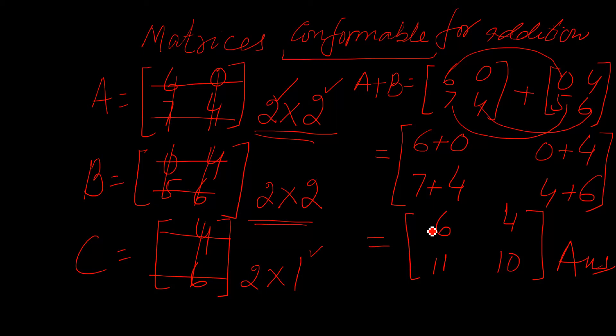But if someone asks you add A plus C, you cannot add it. Why? Because you should know the reason. The reason is that dimensions of A is 2 by 2 and the dimension of C is 2 by 1. The dimensions or orders are not same. Similarly we cannot add B plus C because dimensions are different.